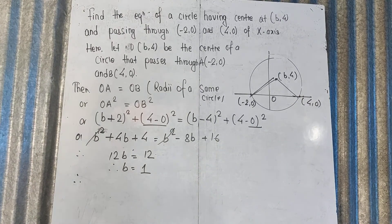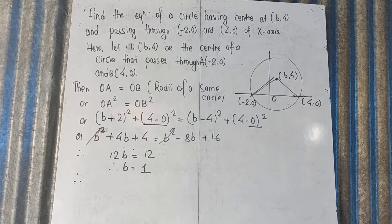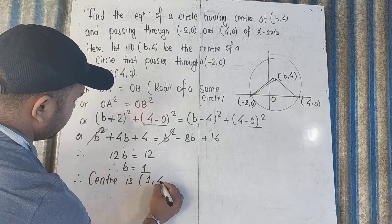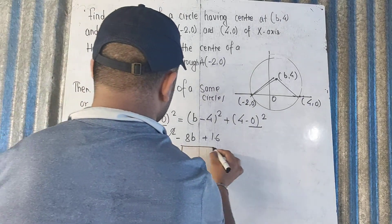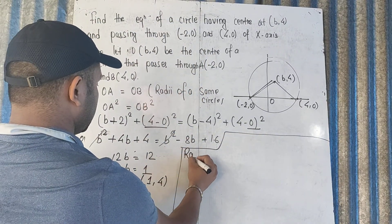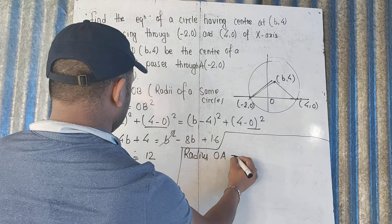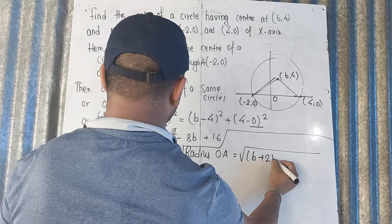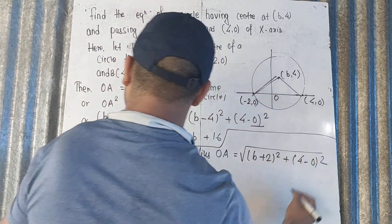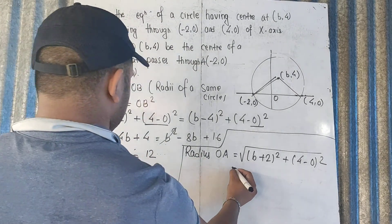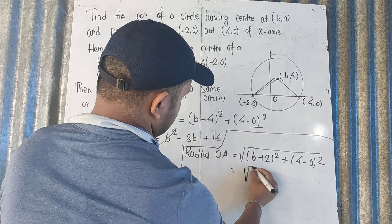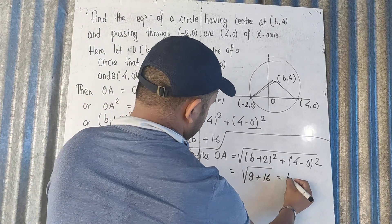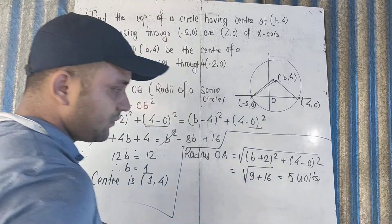Therefore, the center is (1,4). Now for the radius: OA² equals (1+2)² plus (4-0)². That is 3² plus 4² equals 9 plus 16 equals 25. So the radius equals 5 units.